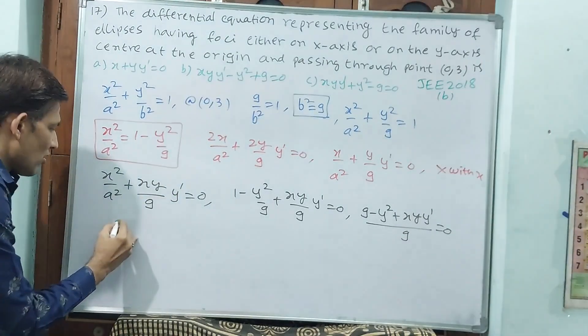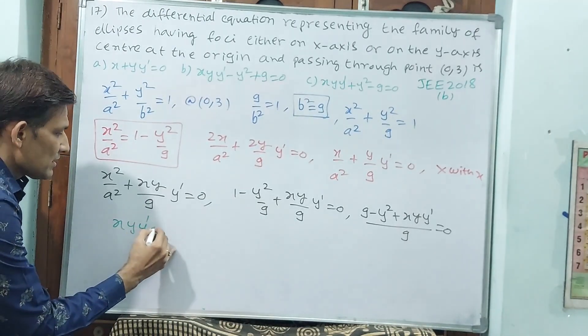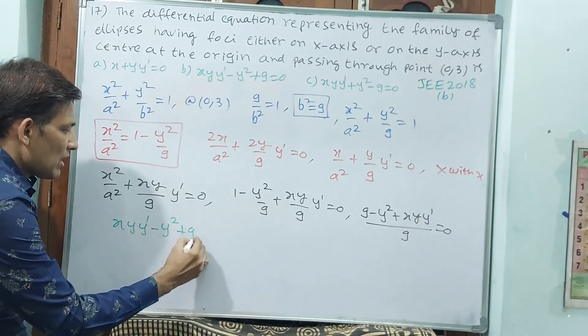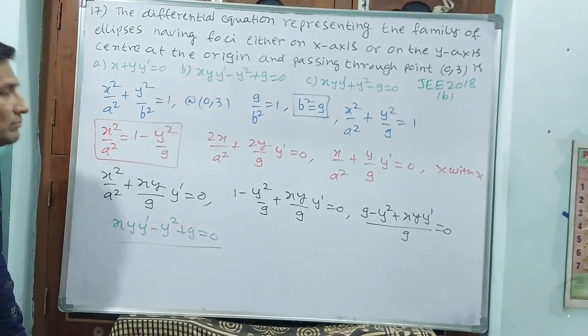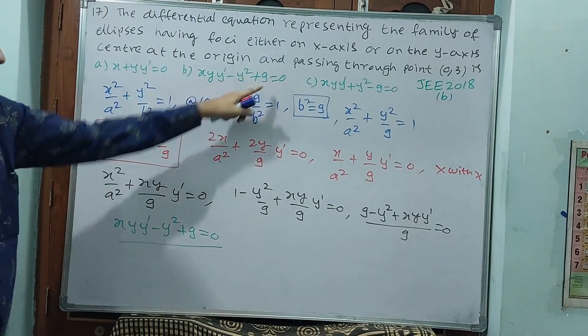Now, send the 9 to that side. Automatically, what will happen? xy y-dash minus y square plus 9 is equal to 0. See? xy y-dash minus y square plus 9 is equal to 0.